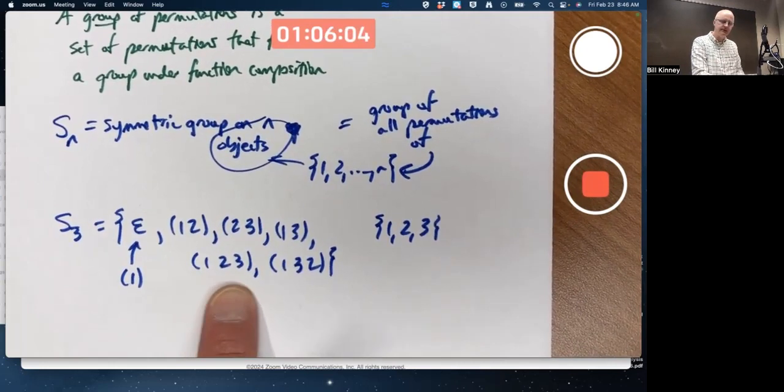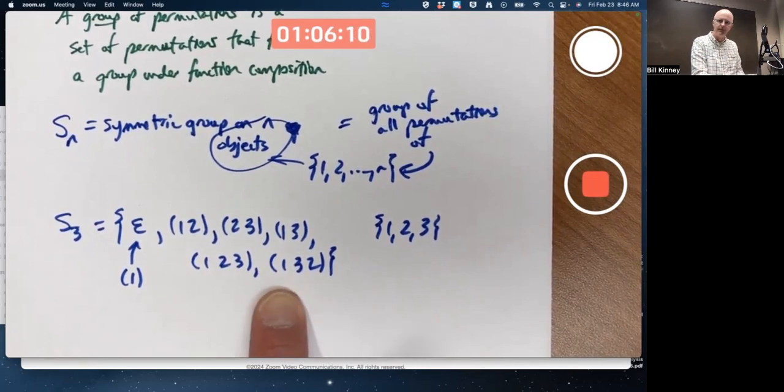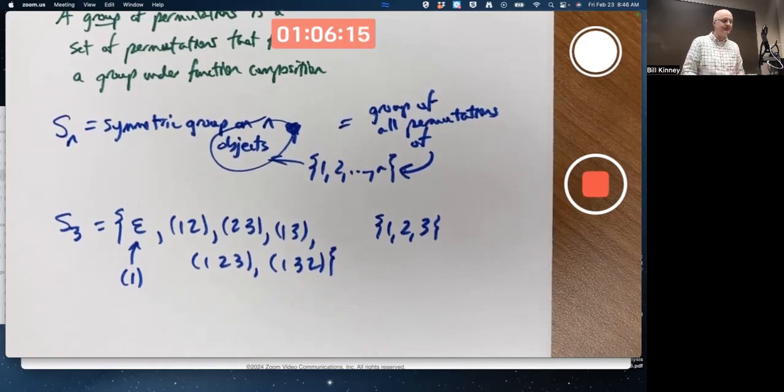This (1 2 3) means 1 gets mapped to 2, 2 gets mapped to 3, and 3 gets mapped back to 1. This (1 3 2) means 1 gets mapped to 3, 3 gets mapped to 2, and 2 gets mapped back to 1. And there are no others. These 6 functions are the functions in this symmetric group on 3 objects.